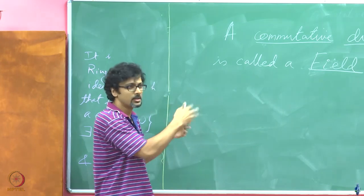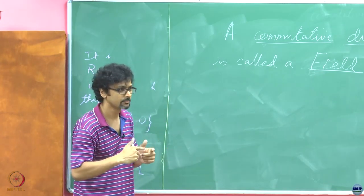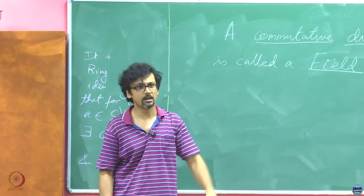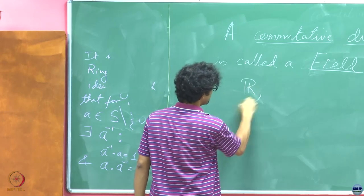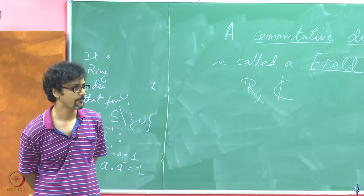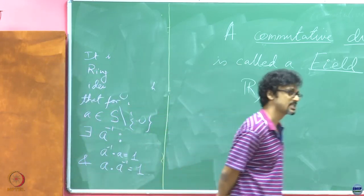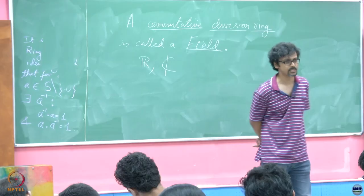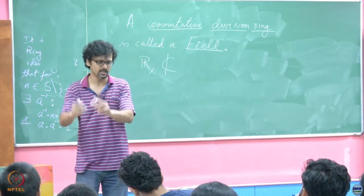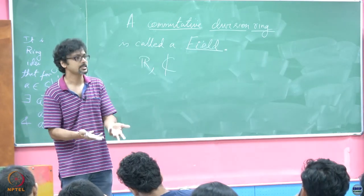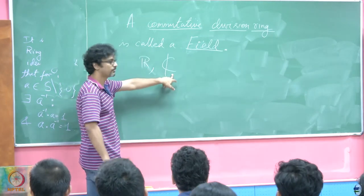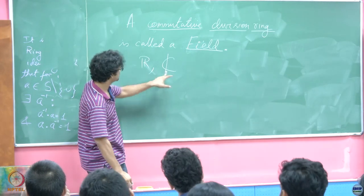The real numbers are naturally fields, and the complex numbers are also fields. That brings us to the notion of a subfield. Given a set, if you take some elements and form another set, that is a subset. So is ℝ a subset of ℂ? Yes. Is ℝ a subfield of ℂ? In this case, yes.